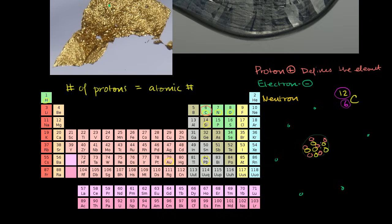Neutrons are just sitting inside the nucleus and they do affect the properties of some atoms of certain elements. The reason electrons don't just fly off on their own is because they are attracted toward the nucleus. They also have an unbelievably high velocity.